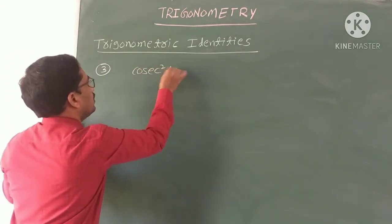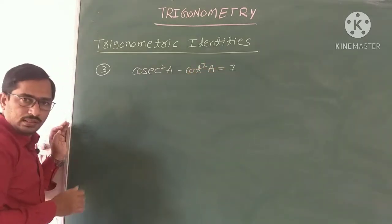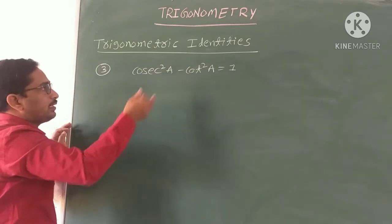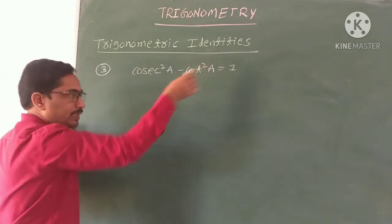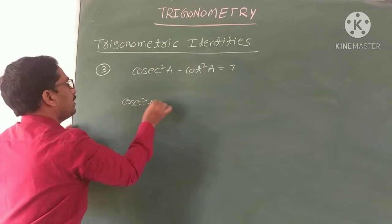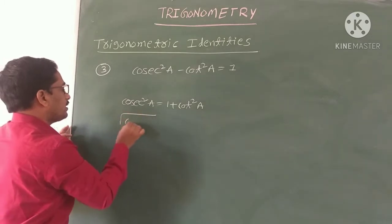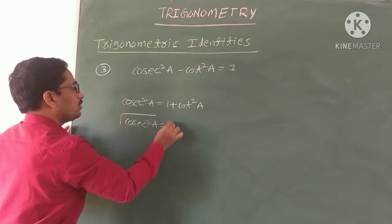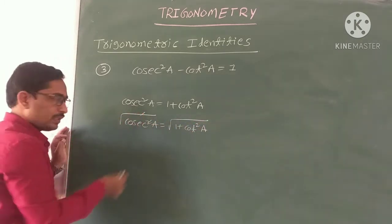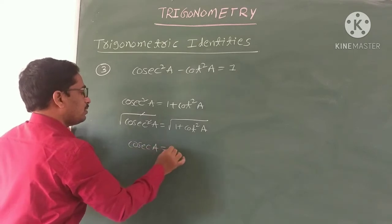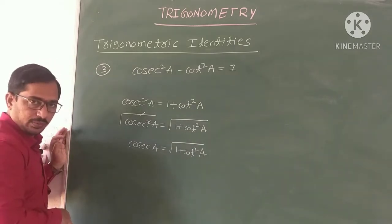The third identity: cosec²A - cot²A = 1. Transposing cot²A to the right side: cosec²A = 1 + cot²A. Applying square root on both sides: cosec A = √(1 + cot²A). So cosec expressed in terms of cot from the third identity.